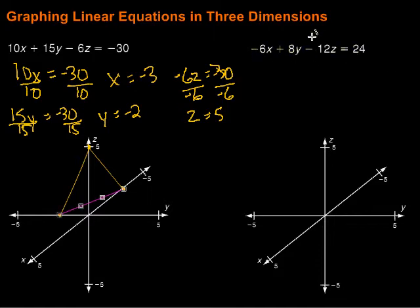For that one, we're going to do the same kind of thing. We want to find the x-intercept, the y-intercept, and the z-intercept. So put in y and z to be zero, so we have negative 6x equals 24. Divide by negative 6, and we're left with x equals negative 4.